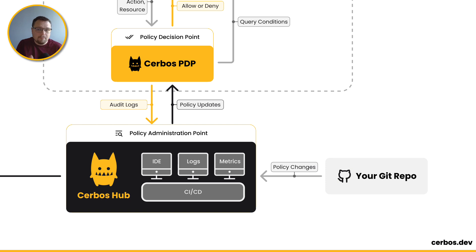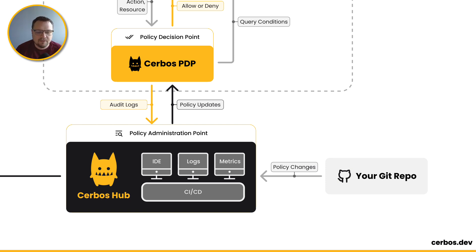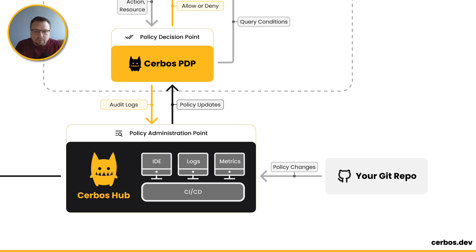Your policy decision points also send back audit logs. Your PDPs generate audit logs for every check that occurs — which subject tried to do which action on which resource, and whether they were allowed or denied under which policy. Those logs flow back into SERBOS Hub's audit log UI, where you can filter and drill down into individual actions. As a developer you can debug authorization checks; as a security team you can understand exactly what a particular identity did across your application estate, all centrally through SERBOS Hub.